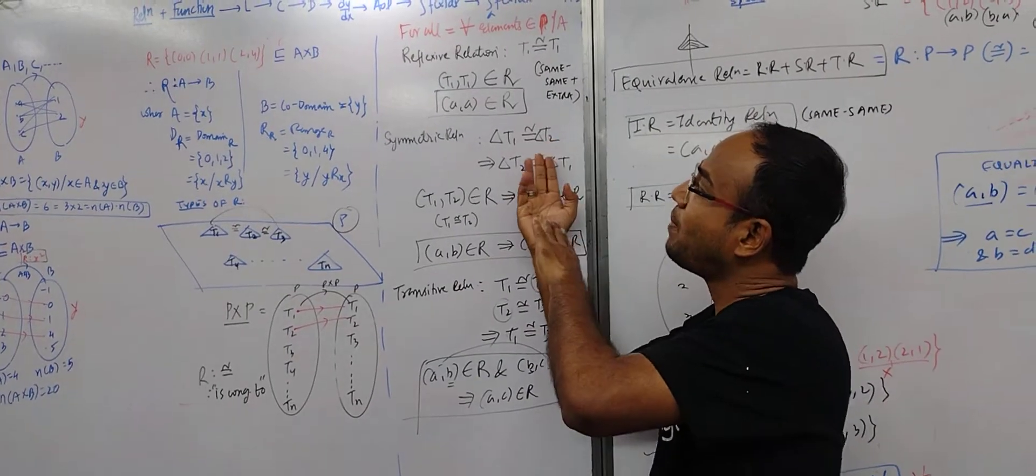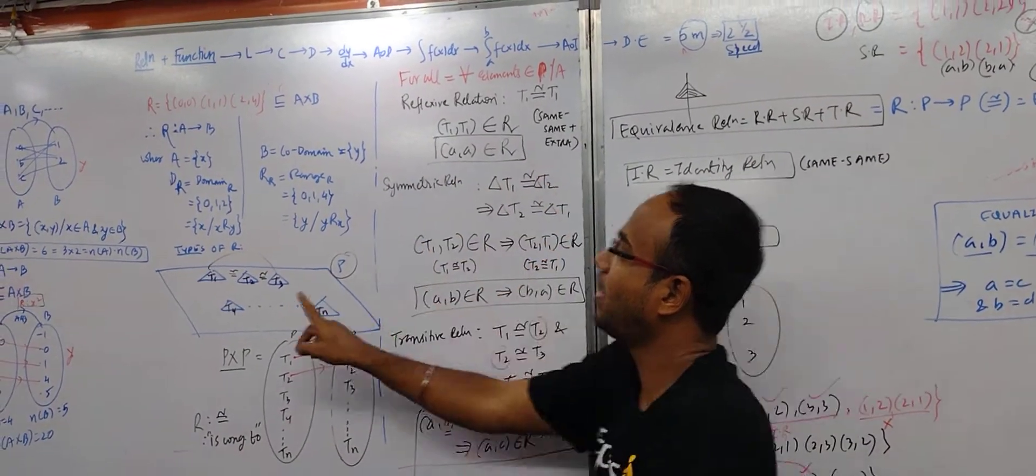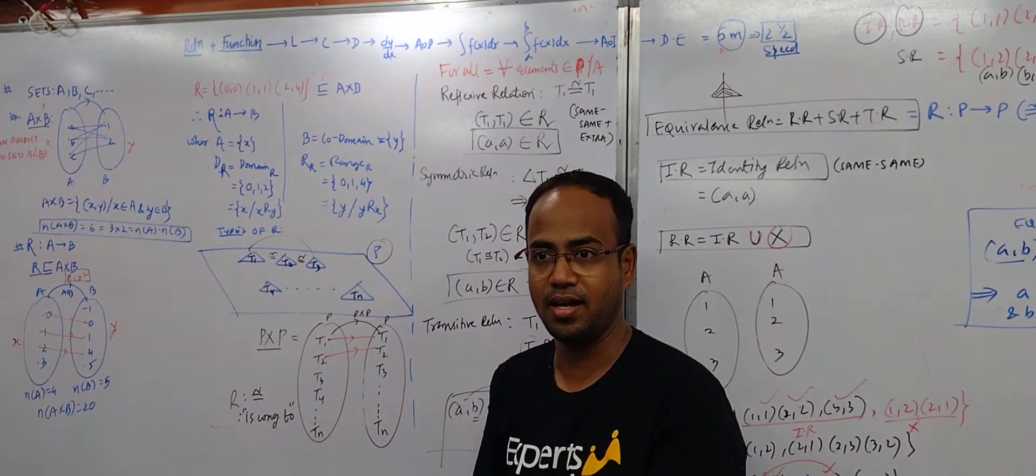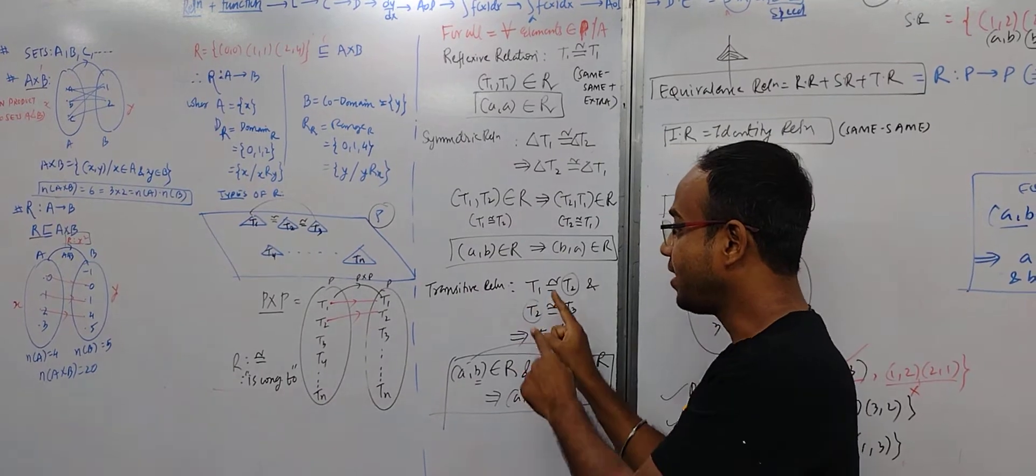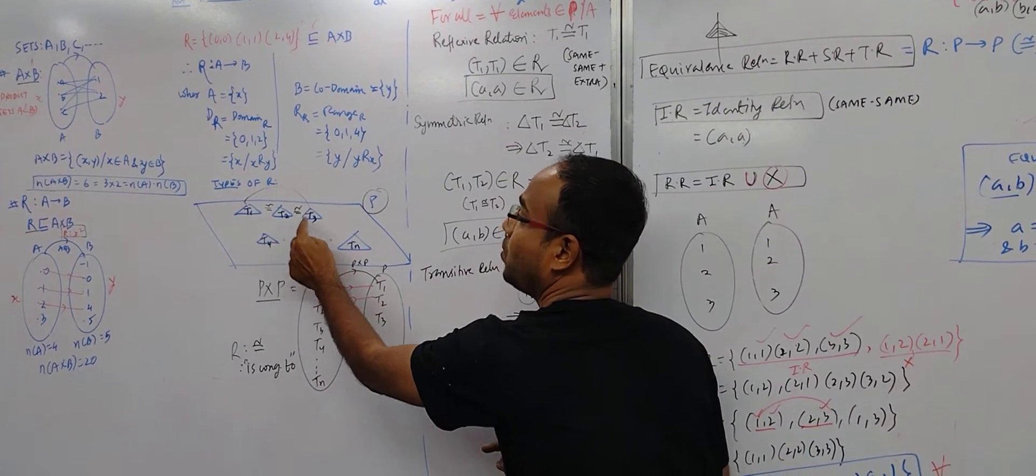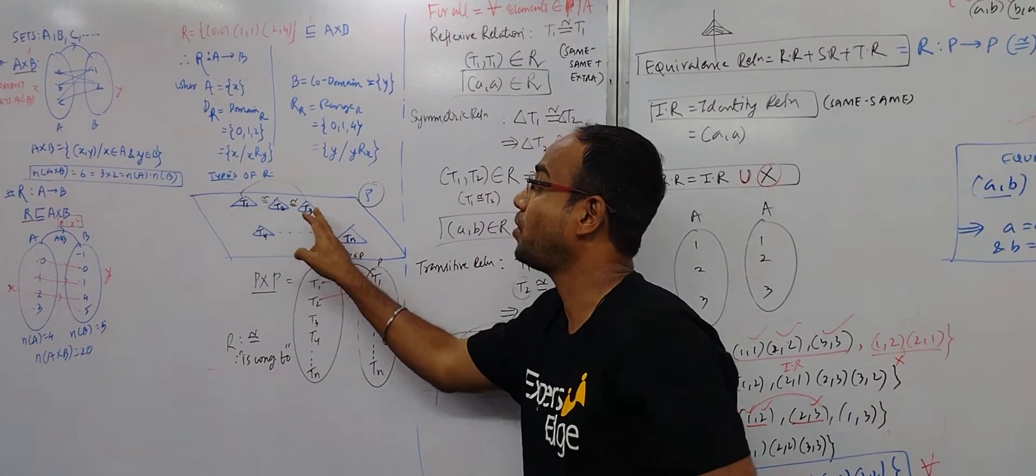T1 is congruent to T2. Can T2 be congruent to T1? If T1 is congruent to T2, T2 is congruent to T1. Yes, both ways are true. It is symmetric. If T1 is congruent to T2 and T2 is congruent to T3, then by default it will be transitive.